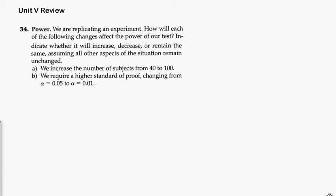This is a unit 5 review problem, problem 34. It's about talking about the power of a test, or in this case, an experiment. So we're combining an experiment with a hypothesis test. They want to know how will the following things affect power? Will it increase it, decrease it, or remain the same, assuming everything else is fixed.